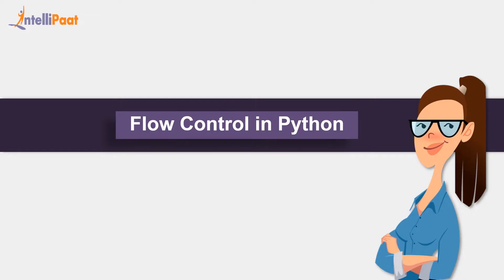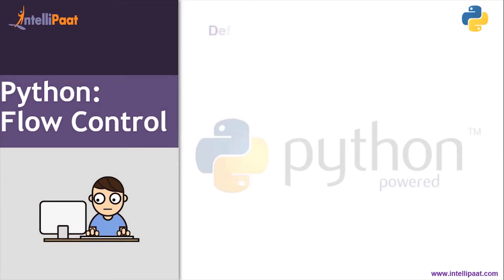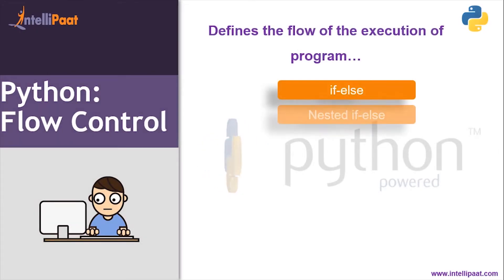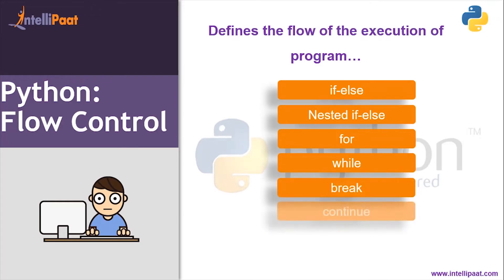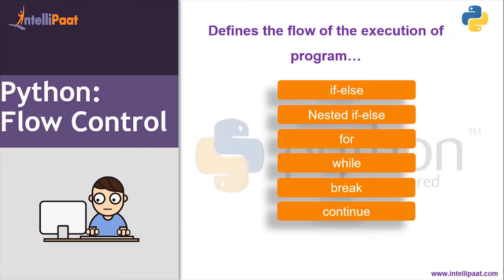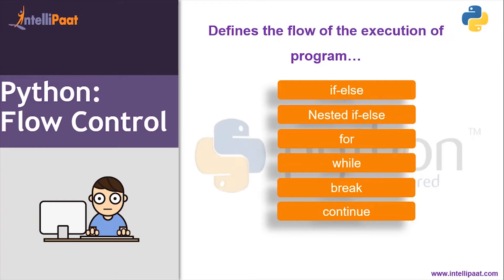In this session we'll learn about different types of flow control like if, else, for, while, etc. that we are going to use in Python. These flow controls are the ones which control the flow of execution of your program. We have six different types of flow control in Python: if, else, nested if-else, for, while, break, and continue.